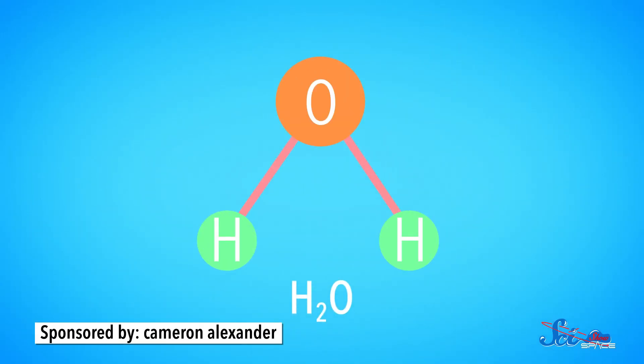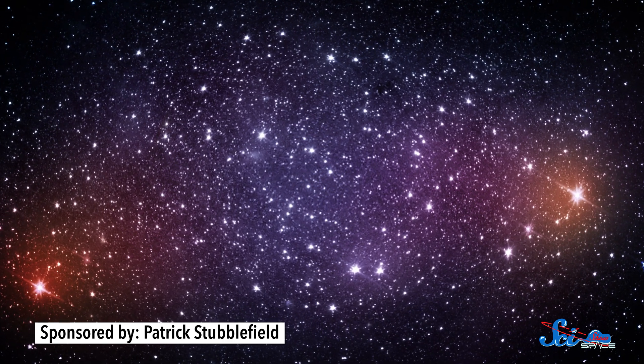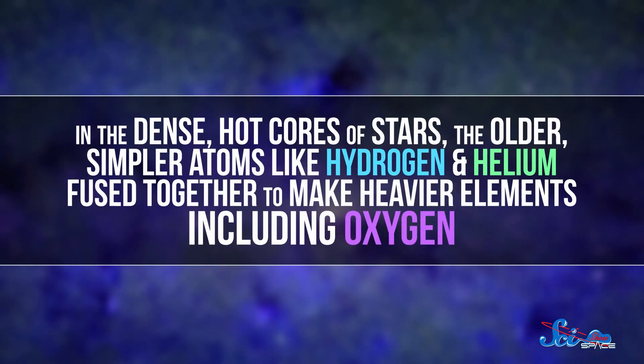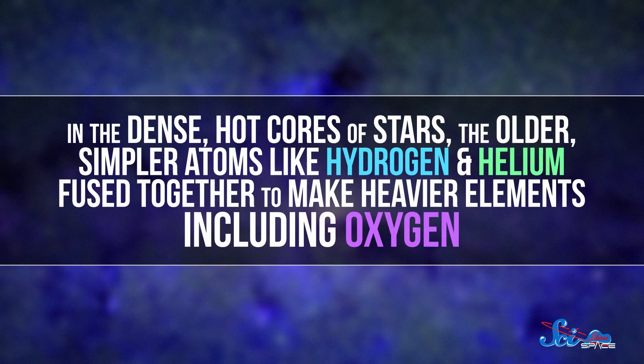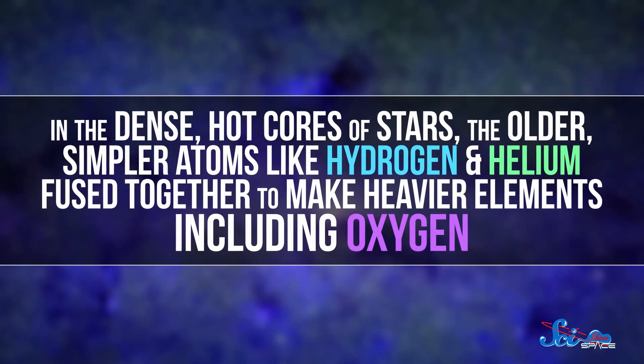First, let's start with the components of water — H2O, two hydrogen atoms bonded to an oxygen atom. Hydrogen is really old, like almost as old as the universe. About 14 billion years ago, just a few minutes after the Big Bang, particles that formed began to bump into each other, combining to create the first atomic nuclei — mostly hydrogen, some helium, and a little bit of lithium. Oxygen arrived on the scene about a billion years later, when stars began to form. In the dense, hot cores of stars, the older, simpler atoms like hydrogen and helium fused together to make heavier elements, including oxygen.